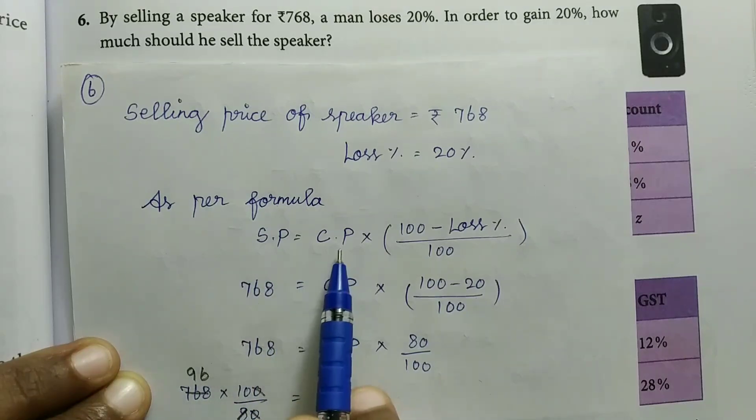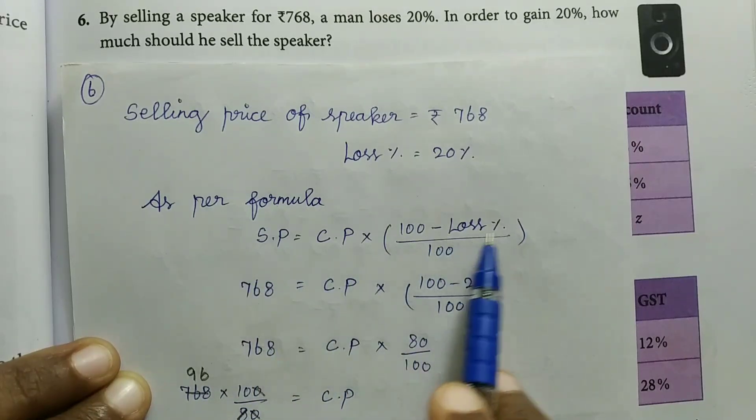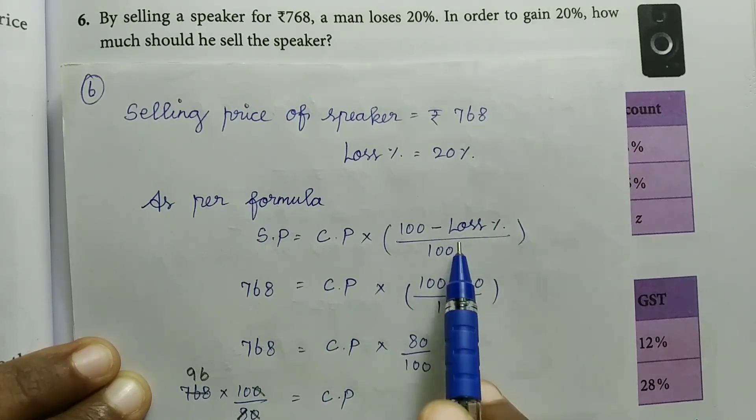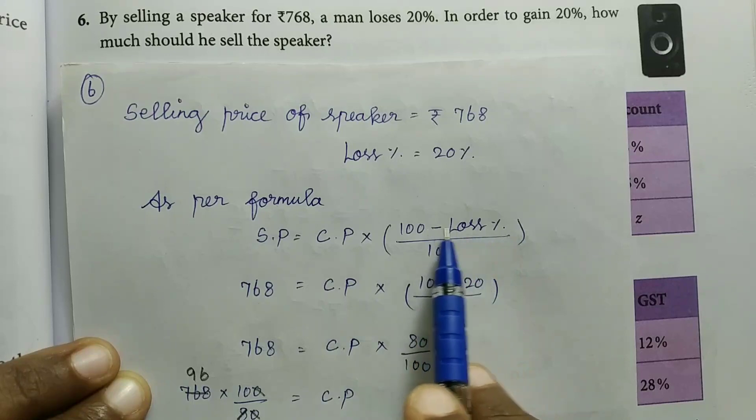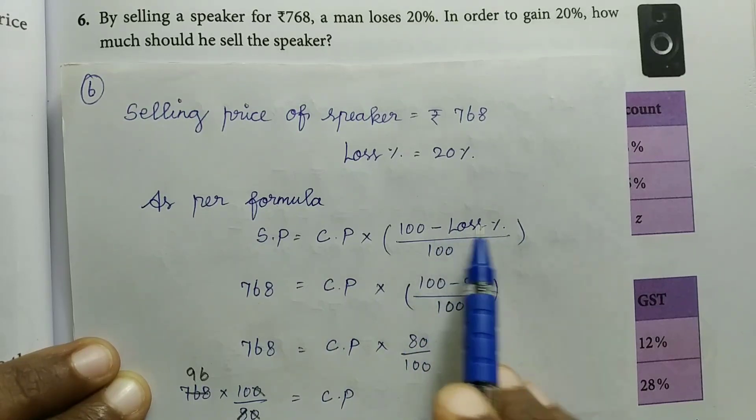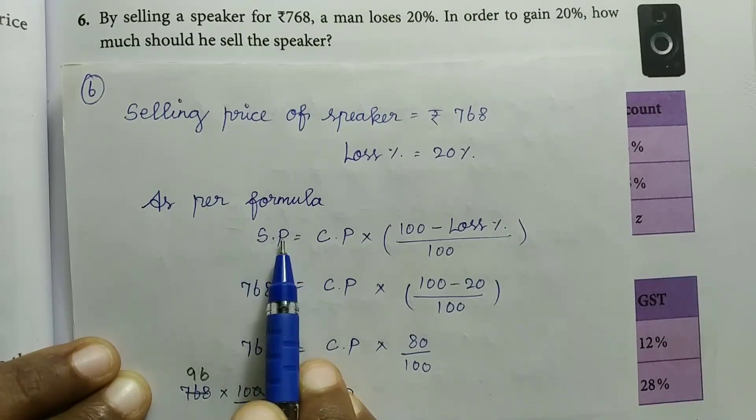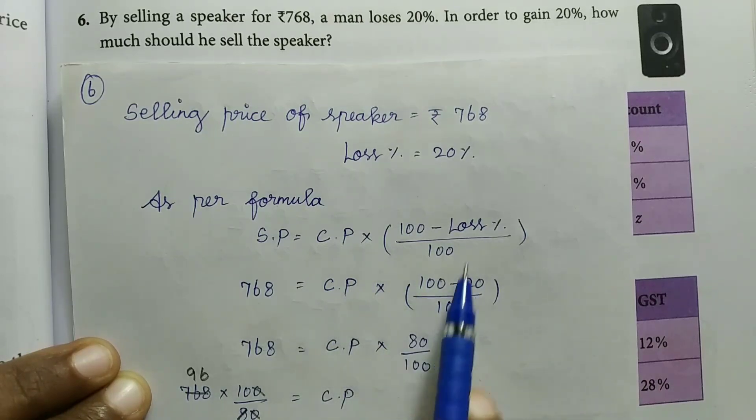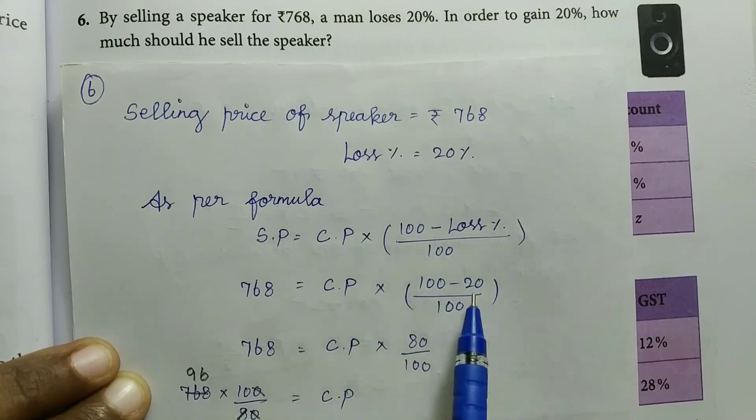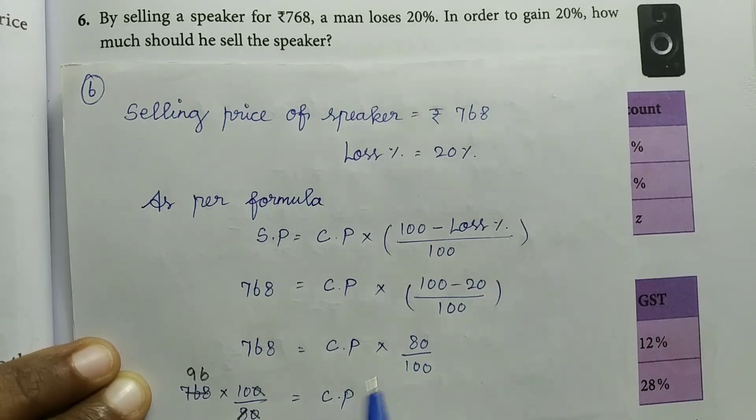The selling price of the speaker is Rs. 768 at 20% loss. So we will find the cost price. The formula is: SP = CP × (100 - Loss%) / 100. Here the loss is 20%, so 768 = CP × (100 - 20) / 100, which equals CP × 80 / 100.